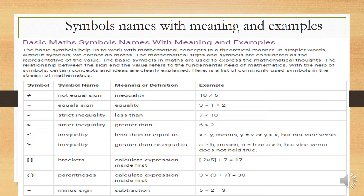The next symbol is the minus sign. Minus sign means subtraction. Example: 5 minus 2 is equal to 3. It's important to clarify and identify the symbol names, their meanings, and examples.